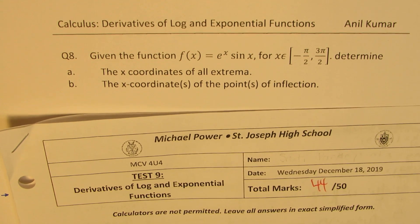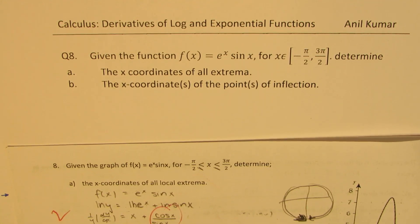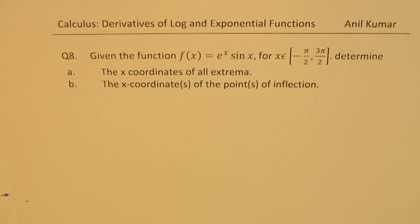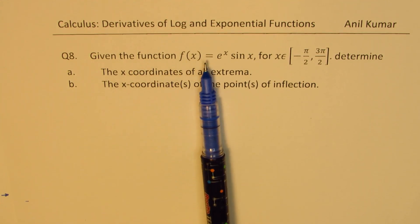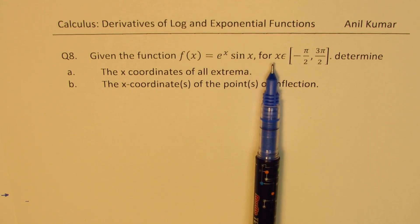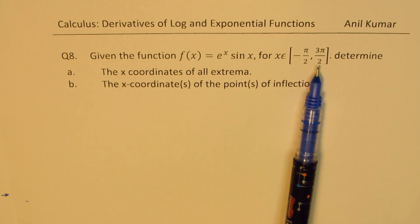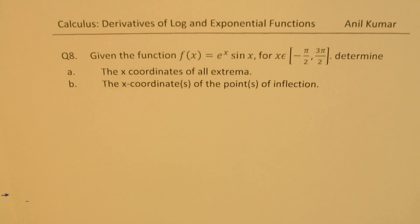Here is the very last question where we'll figure out what is the maximum, minimum, and the inflection points. I haven't drawn the graph for the function, so the rest of the question is kind of like this. Given the function f(x) equals e to the power of x sin(x) for x belongs to minus π/2, 3π/2, determine the x coordinates of all extrema and the x coordinates of points of inflection.